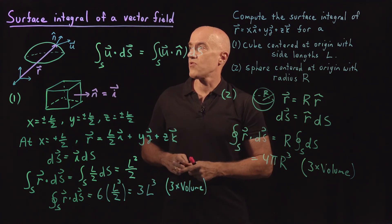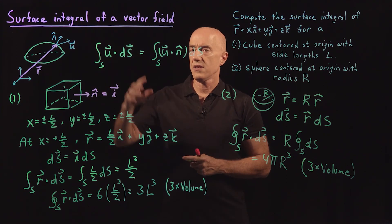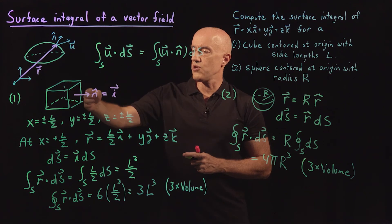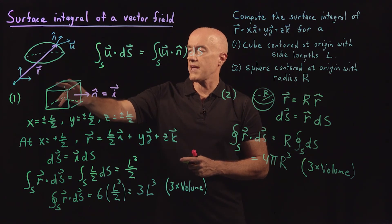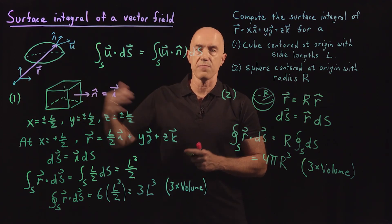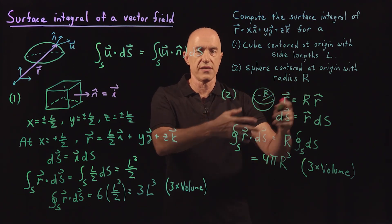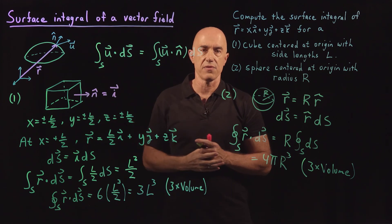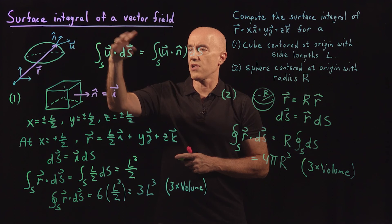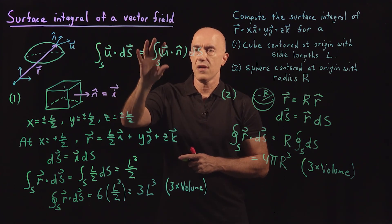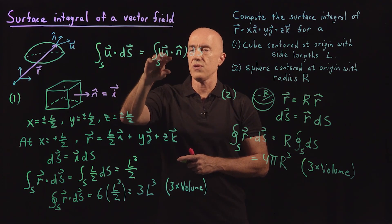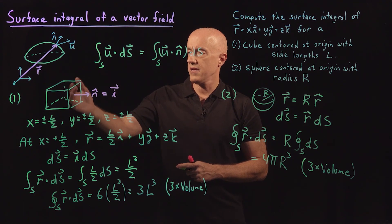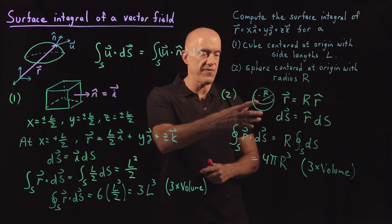To summarize: we defined the surface integral of a vector field. To do that, we need to know the normal unit vector to the surface. For a cube centered at the origin, it's simply i, j, or k depending on the face. For a sphere centered at the origin, it's r-hat. We then integrate the dot product of the vector field u with the normal unit vector over the surface element ds, converting the surface integral of a vector field into the surface integral of a scalar field. I worked the example for a cube centered at the origin and for a sphere centered at the origin.